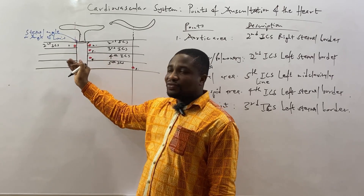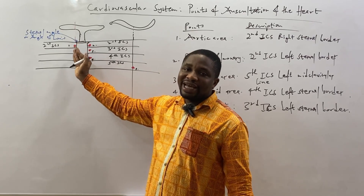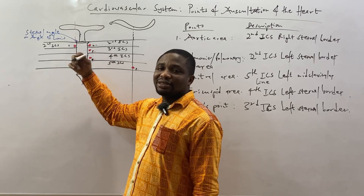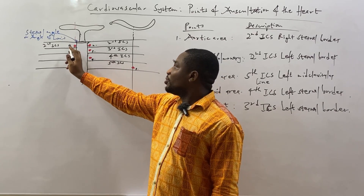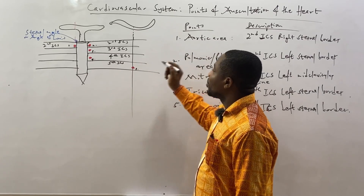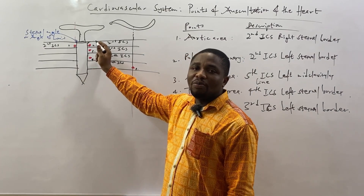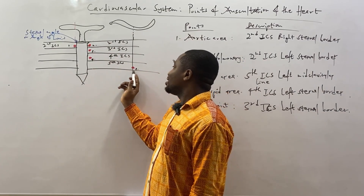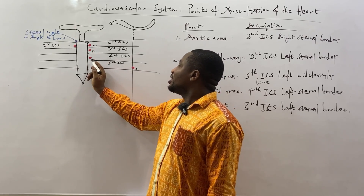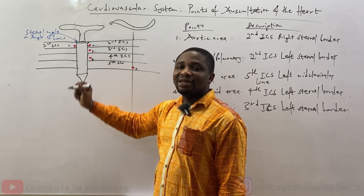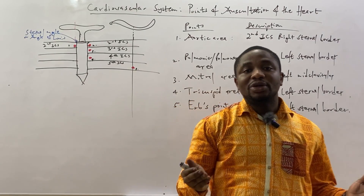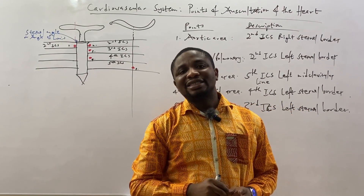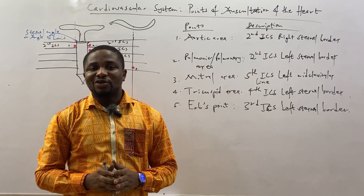At the edge of the sternum, we have the border or the edge. So the first auscultation point, as labelled here, we will call it the aortic area. The second is the pulmonary or pulmonic area. The third, the mitral area. The fourth, the tricuspid area. And the fifth, Erb's point, which is an additional point — not necessarily one you have to auscultate at that anatomical landmark. So those are the points of auscultation.